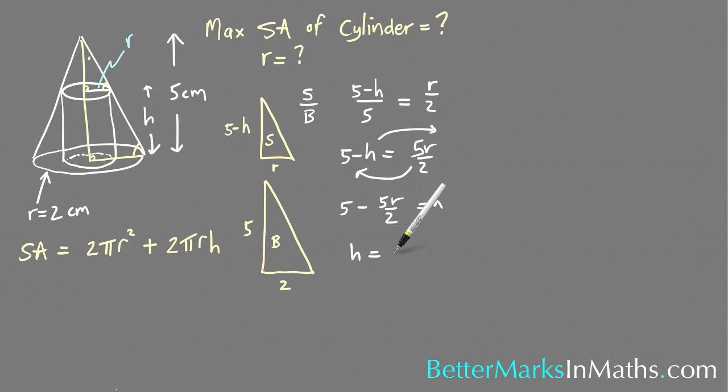So h is equal to 10/2 which is that 5, minus 5r/2, and that's just equal to (10 - 5r)/2. And now I want to sub this back into this equation here.